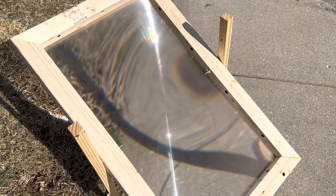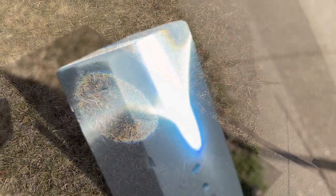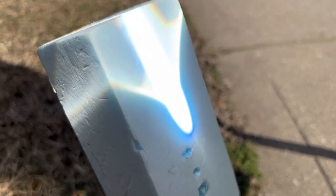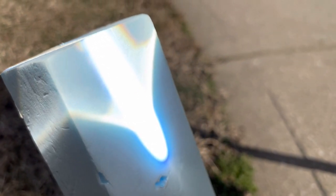When the sun is shining on the Fresnel lens, you can adjust the focal point just by angling the lens. Watch what happens to the styrofoam block when we adjust the focal point.